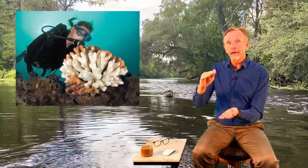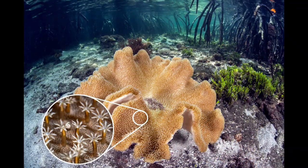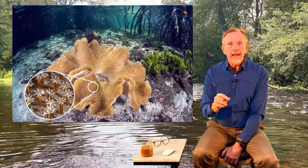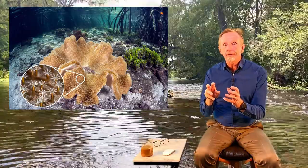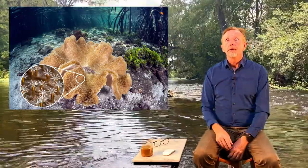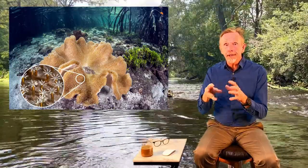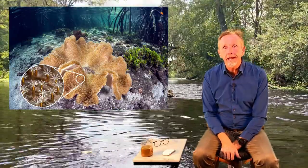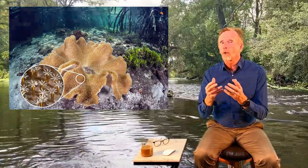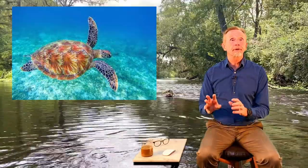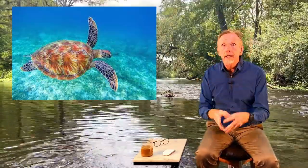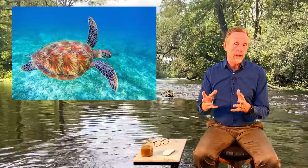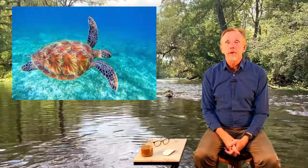Coral reefs only form in clear, warm coastal waters in the tropics — roughly in the 30-degree band from 30° south to the equator up to 30° north. They are formed by tiny little animals called polyps and the single-celled algae that go along with them in a mutualistic relationship. The polyps secrete calcium carbonate, forming that hard outer shell, and those carbonate shells become the coral reef — providing lots of hiding places and habitat for other animals and fish.